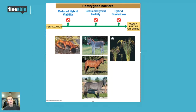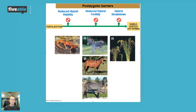The last post-zygotic barrier is hybrid breakdown, shown here with a group of grasses. At first, the offspring look okay — normal and relatively healthy. But over time, if they keep reproducing, their offspring get weaker and weaker, start to die off, and eventually disappear.